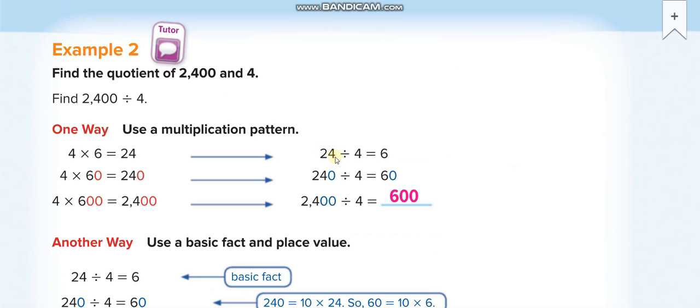Again here, 24 divided by 4 is 6 with 1 zero, 60 with 2 zeros, 600.